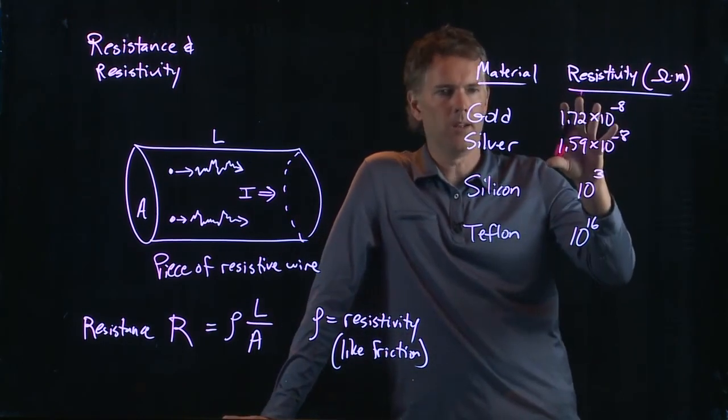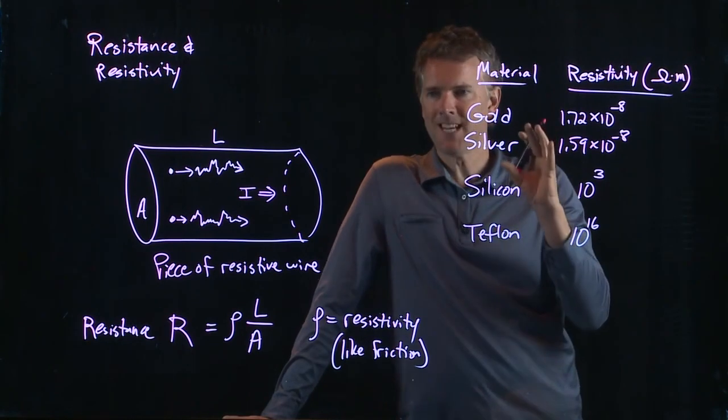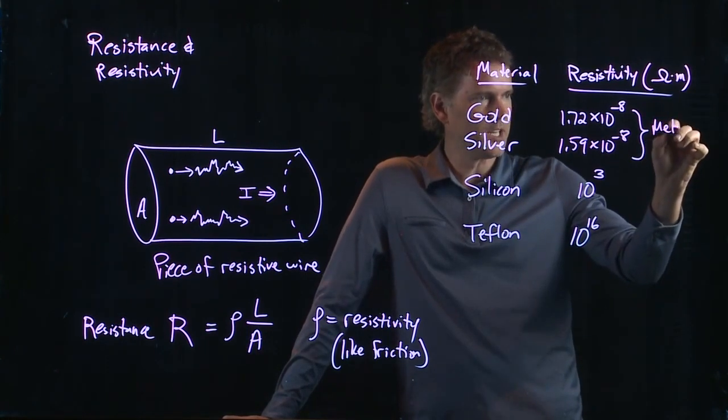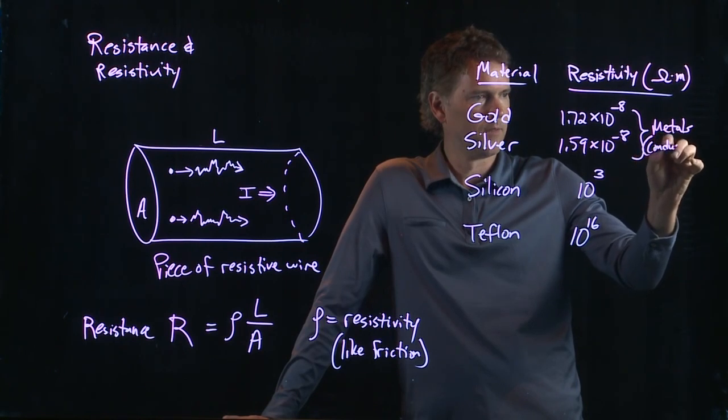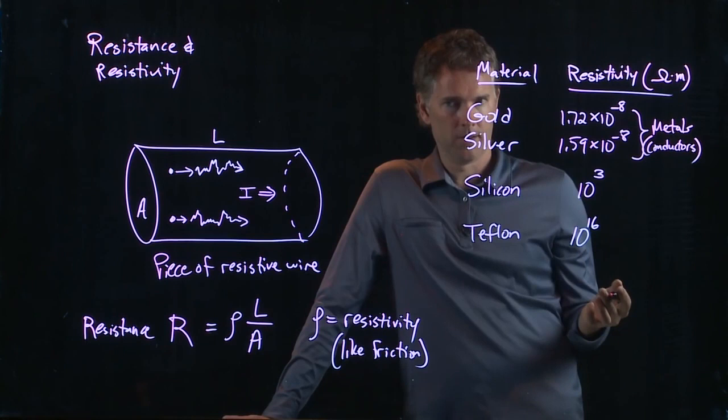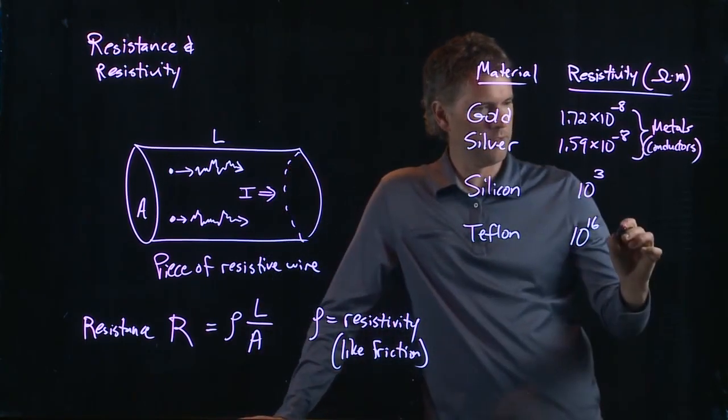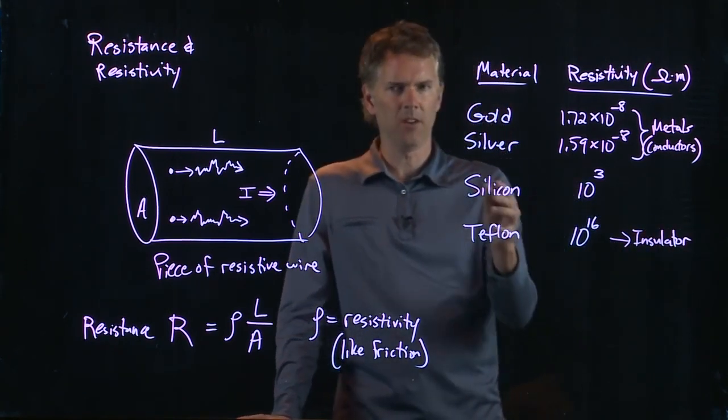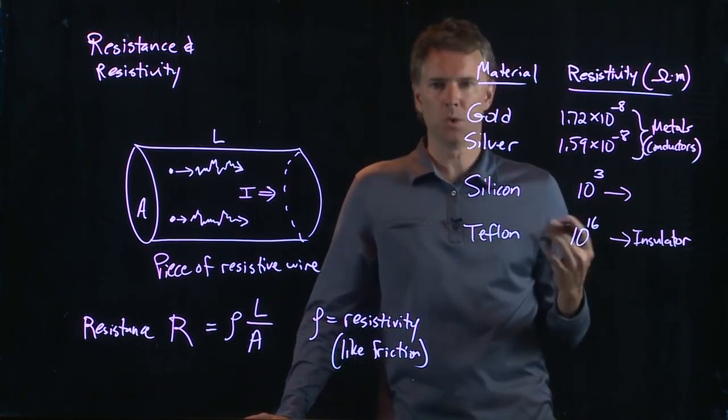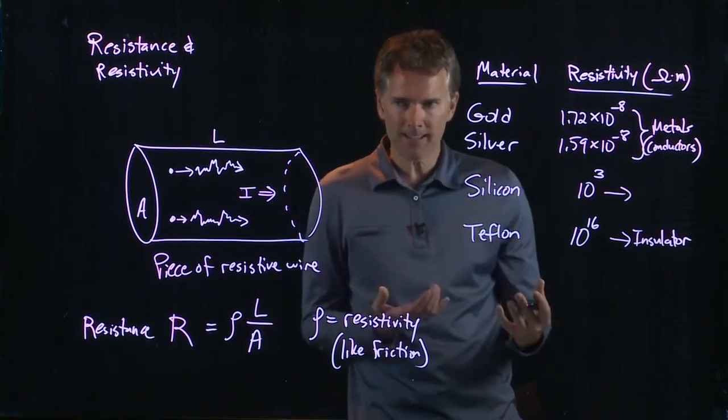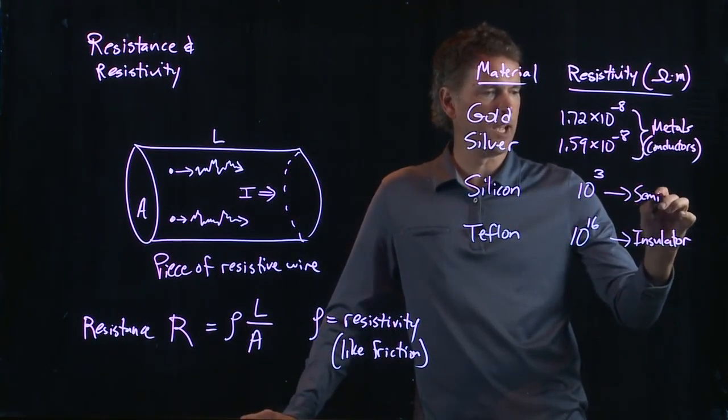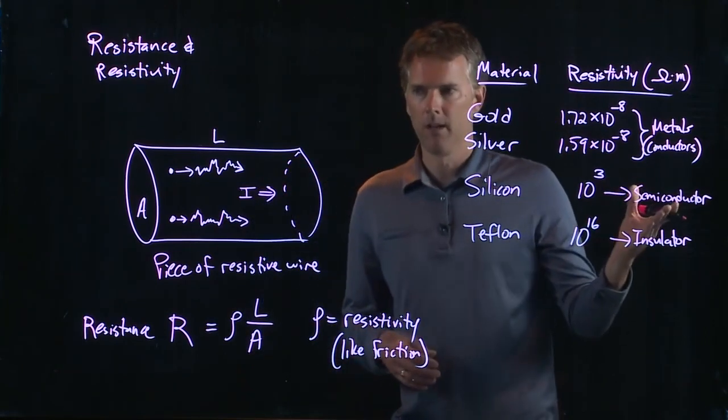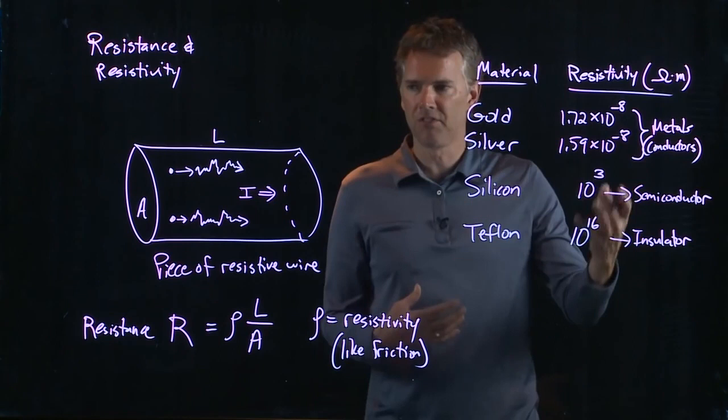And there must be some key here, right? Gold and silver, what types of material are those? Those are metals, right? Those are conductors. Teflon, with this huge resistivity, is, of course, an insulator. Silicon is one of these interesting materials that is sort of in between the two. And, in fact, it can act like an insulator or a conductor, and that's why we call it a semiconductor. So that's a word that you've heard a lot, a semiconductor. It somewhat conducts, or it conducts some of the time.